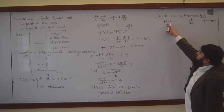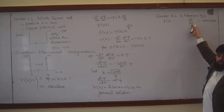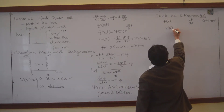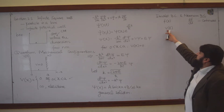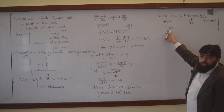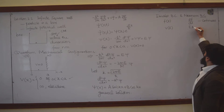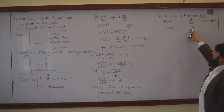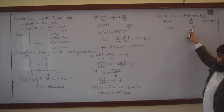Either the function or its derivative will remain continuous. For example, if you consider the electric potential in electrodynamics — if this is the electric potential, then the derivative of the electric potential is the electric field. So the potential is continuous on a boundary, or its derivative — the negative gradient of the potential, which is the electric field — will be continuous on the boundary.